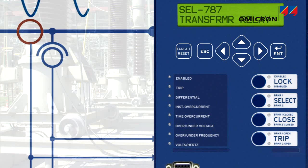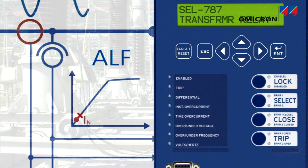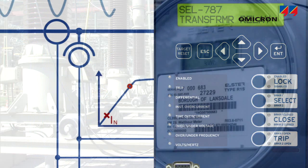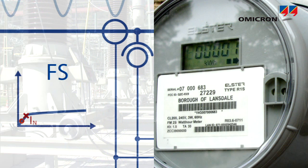Protection CTs must be capable of driving high-fault currents to the protection system without saturation. And vice versa, metering CTs must provide accuracy within the range of operational currents and saturate slightly above that range in order to protect the energy meters.